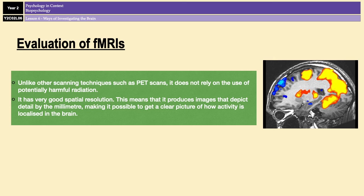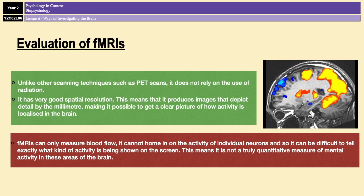A strength of fMRIs is that they are non-invasive — they don't rely on potentially harmful radiation like PET scans, and they don't involve inserting anything into your brain. Also, fMRIs have very good spatial resolution, producing images that depict detail by the millimeter, making it possible to get a very clear picture of how activity is localized in the brain. However, fMRIs can only measure blood flow and can't home in on the exact type of activity of each individual neuron, making it difficult to tell exactly what type of activity is being shown — it shows us where the activity is, but not what the activity is.